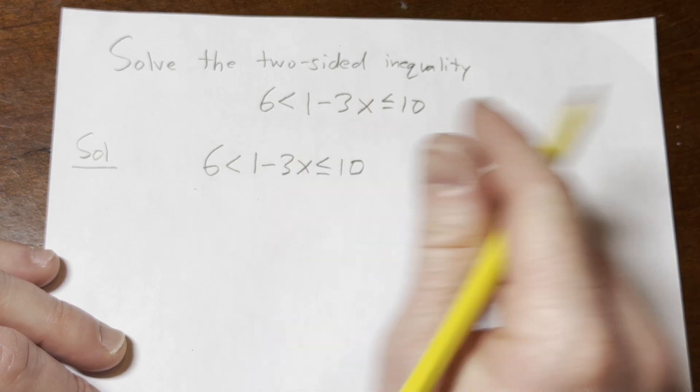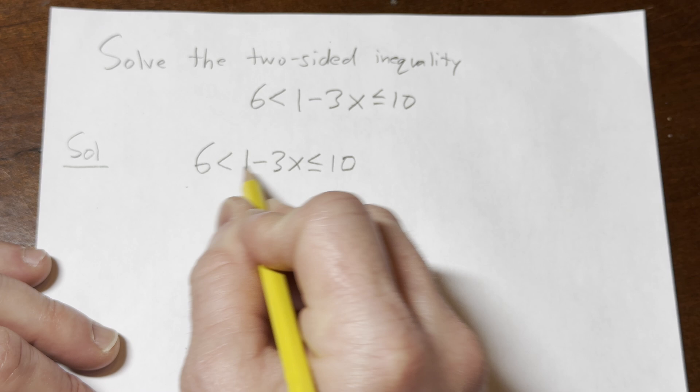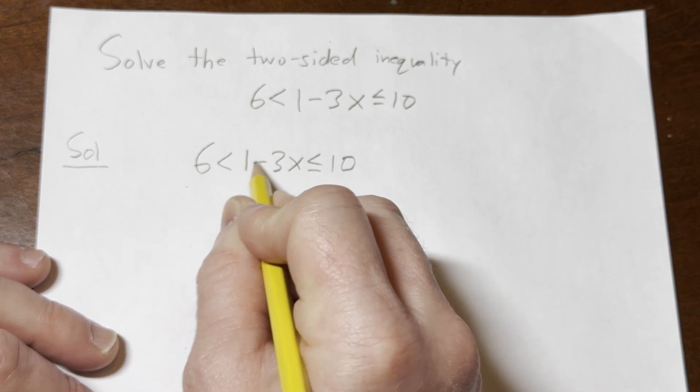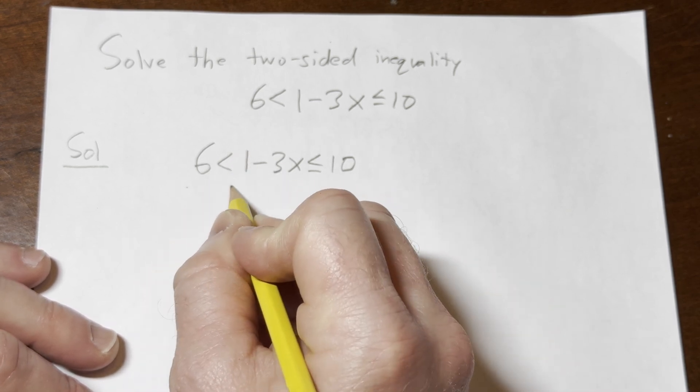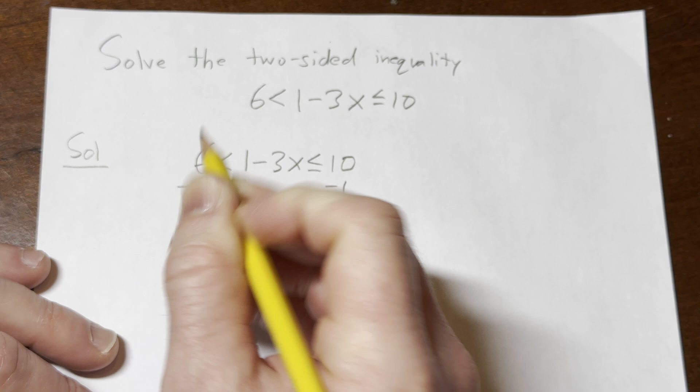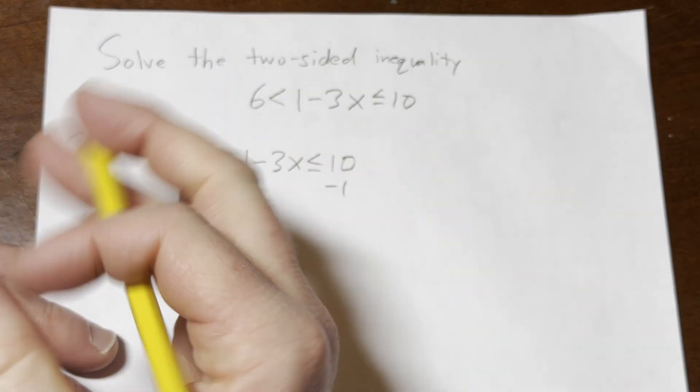The first step is to get rid of this 1 because it's being added to it. It's a positive 1. There's an addition here. So we can subtract 1 from all three sides, from here, from here, from here.